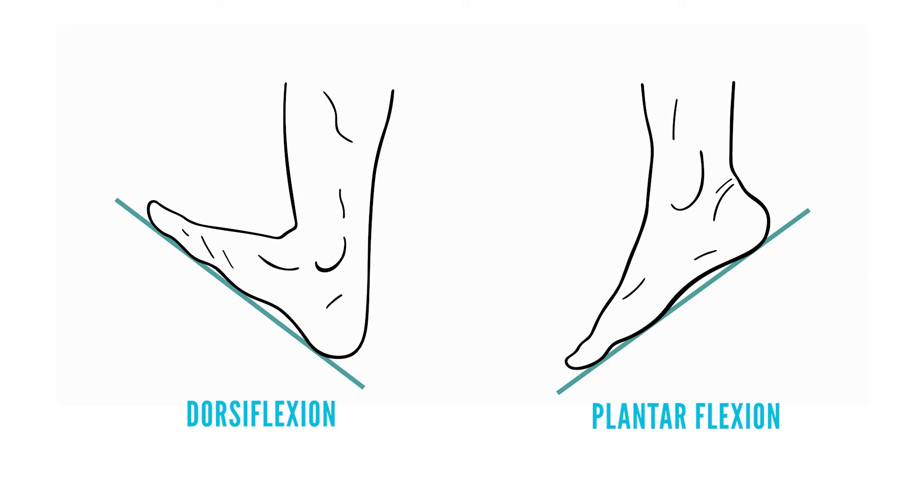Now let's look at the foot. The foot's plantar surface is on the sole of the foot and its dorsal surface is on the top or instep of the foot. This makes sense when you think about the dorsal fin on the back of a dolphin and plantar warts on the bottom of the feet. When you pull the dorsal surface of the foot towards the knee, it's called dorsiflexion, and when you point your toe to the floor, that's called plantarflexion.